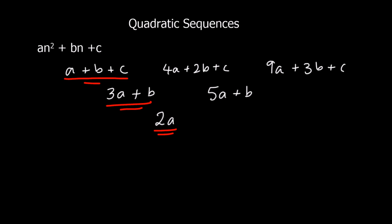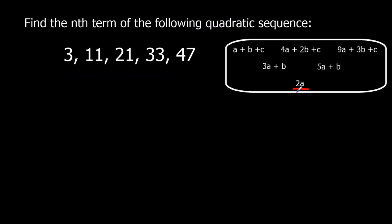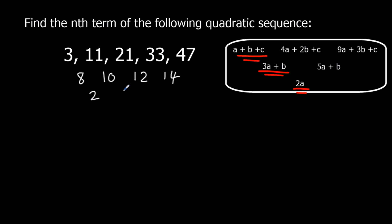Now let me show you an example. We work out the first differences: 11 minus 3 is 8, 21 minus 11 is 10, 33 minus 21 is 12, 47 minus 33 is 14. Then the second differences are all 2. The second difference will always be the same constant number in a quadratic sequence.